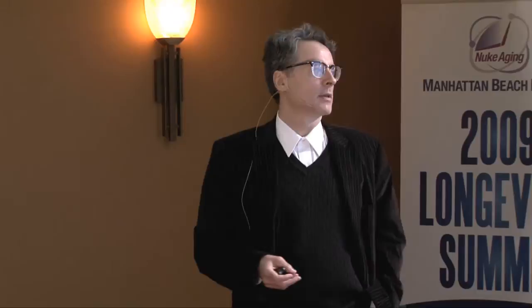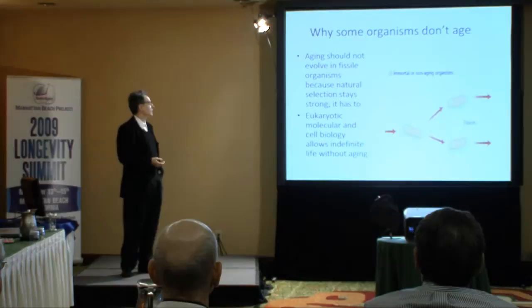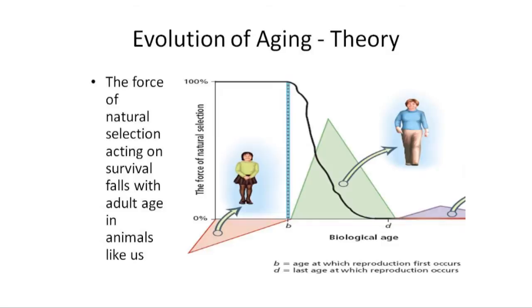What this tells those of us who are evolutionary biologists is that the molecular and cell biology of eukaryotic cells has nothing to do with the fundamental cause of aging whatsoever. Not telomeres, not metabolic damage, none of those things. All of those are things that evolution can readily solve. So we explain aging in completely different terms.